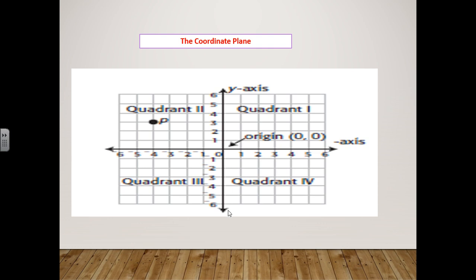The two lines are called axes. The horizontal one is called the x-axis, and the vertical one is the y-axis. In the middle we have zero. To the right are positive numbers, to the left are negative numbers, up is positive, and down is negative. You must know that.